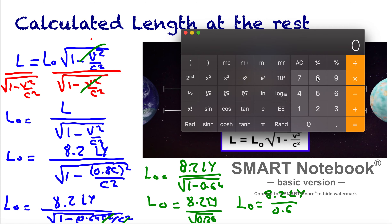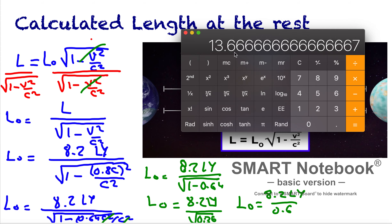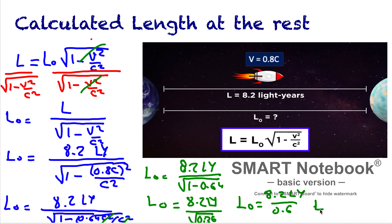8.2 divided by 0.6 gives 13.66. So the distance calculated from Earth, L0, is approximately 13.7 light years — rounded to one decimal place. This is the proper distance, the distance at rest as measured from Earth.